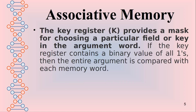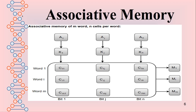The key register provides a mask for choosing a particular field or key in the argument word. Here, the argument (IA) is the query or pattern to be searched. The key register assigns a key to search the argument.